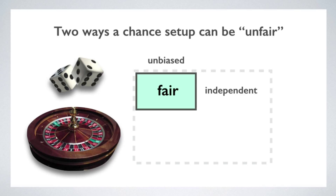Now, with these concepts under our belts, in the next video I'd like to turn to a question that my students inevitably ask at this stage, which is about the relationship between the idealized probability model that we've been talking about and a real physical system, like a coin or a dice. So we'll turn to that now.